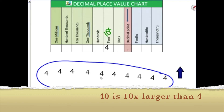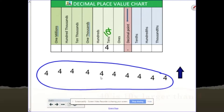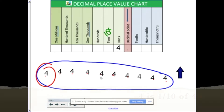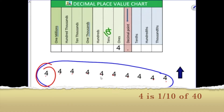But what if I only wanted 1 tenth of these? If I take just 1 of them — or 1 tenth — I'm left with just 4 by itself. So 4 ends up being 1 tenth the size.